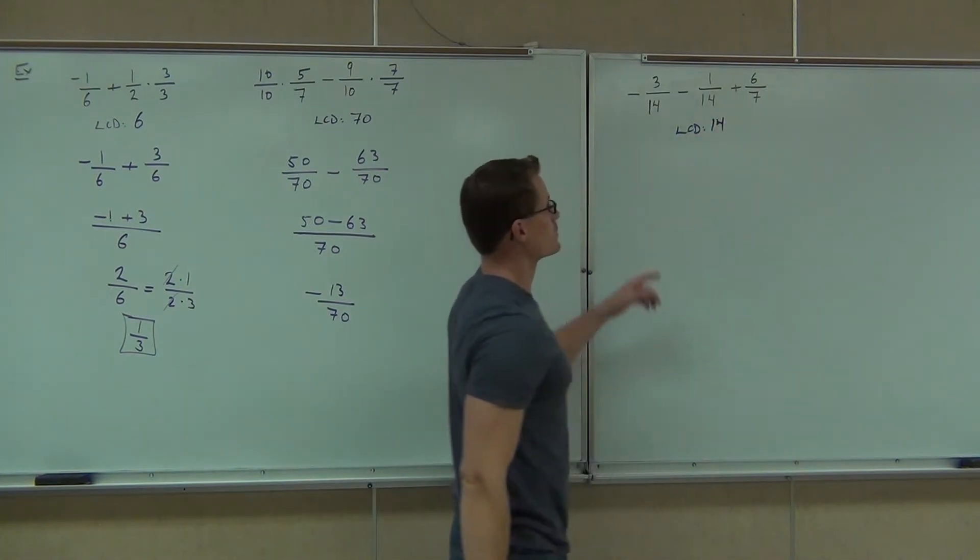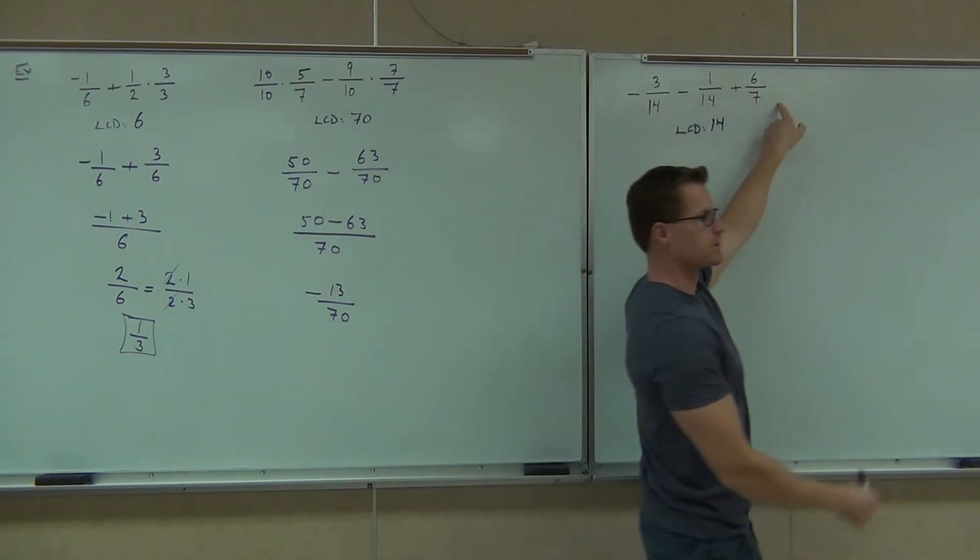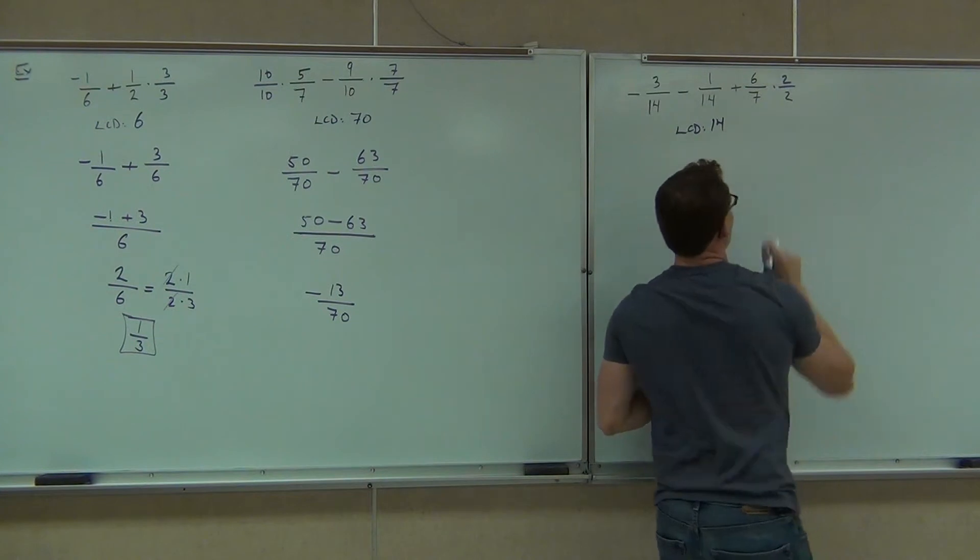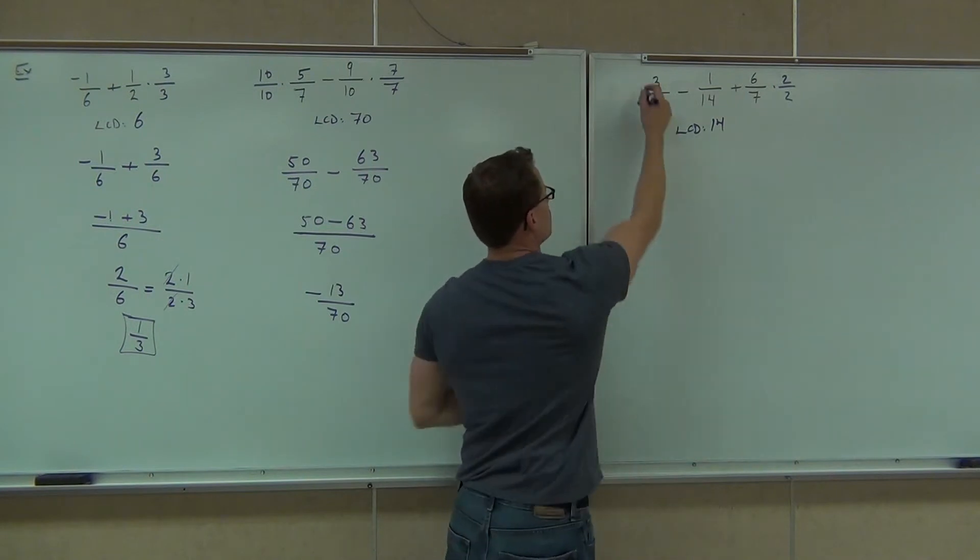We'll find out what the fractions are. Do we need to multiply this fraction by anything? No. This fraction? No. This fraction? Yes. Times 2 over 2. What are we going to do to this fraction? Put the minus by the numerator. Good.